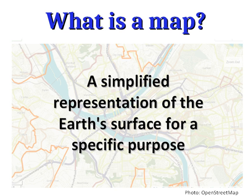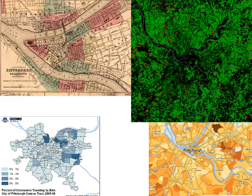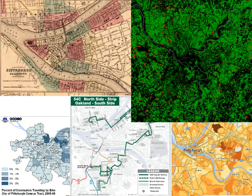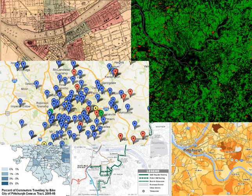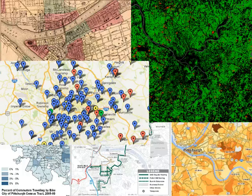Every map has a purpose or a goal, and that goal tells you what kind of choices you should make in creating that map. We can map the same place in a variety of different ways depending on what our goal is. Here you see a whole bunch of different maps made of the city of Pittsburgh — all equally valid, just serving different purposes, and therefore showing different information and different aspects of the Earth's surface.